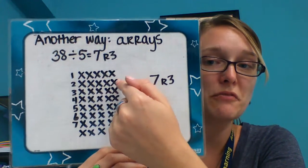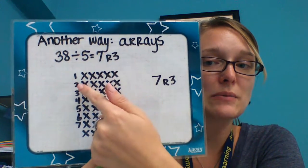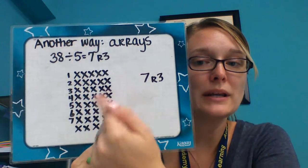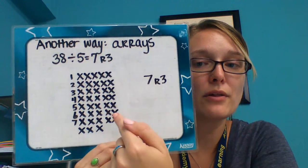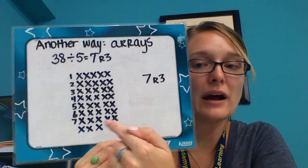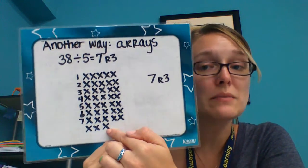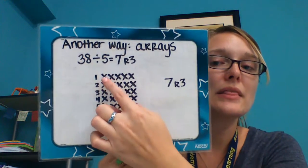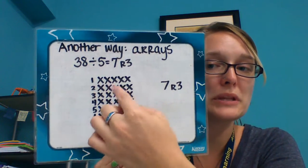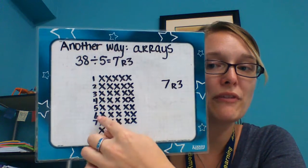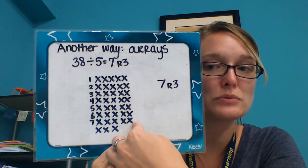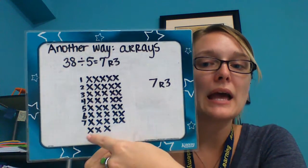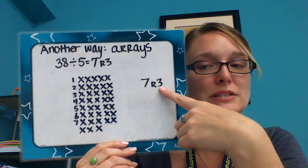When I got to the end of a row I went to another. Now I have 10, 15, 20, 25, 30, 35, 36, 37, 38. Once I made all my X's and got into my dividend of 38, then I counted up my complete rows: 1, 2, 3, 4, 5, 6, 7 complete rows. So now I know my quotient is 7, and my remainder is 3.